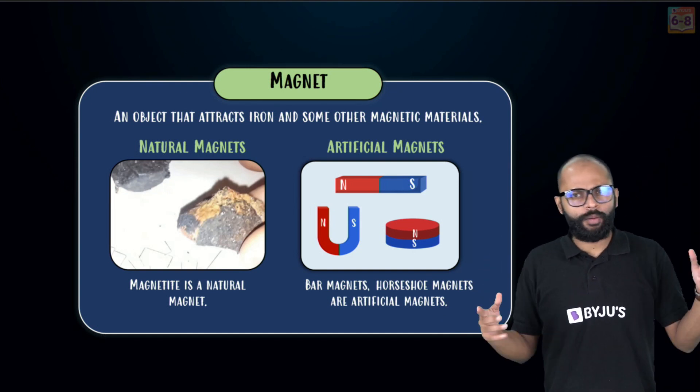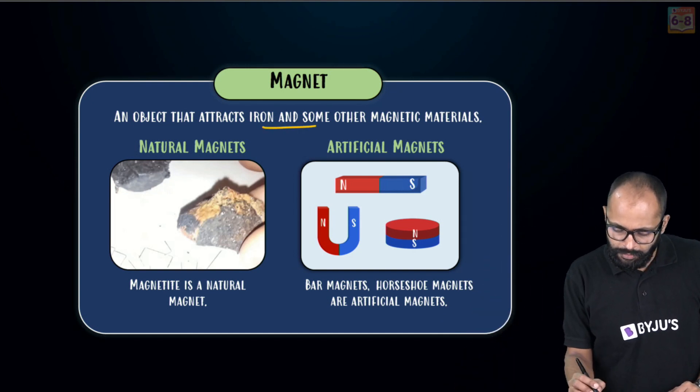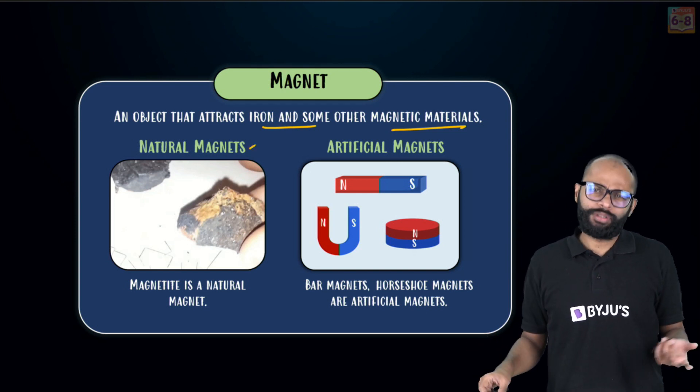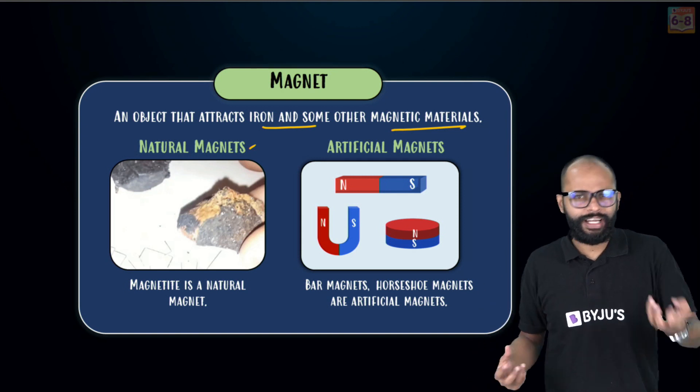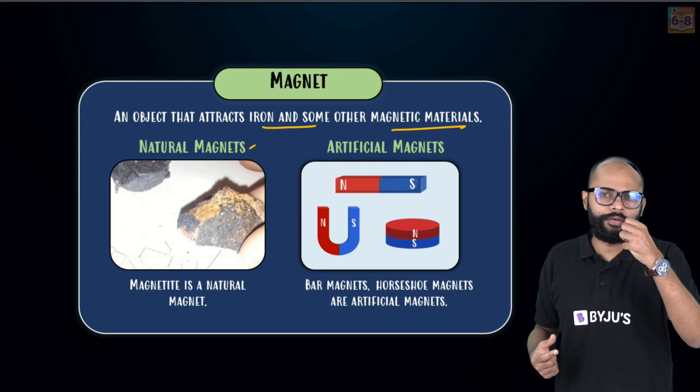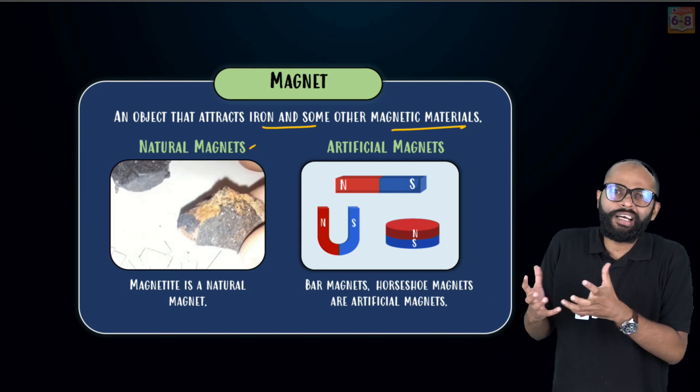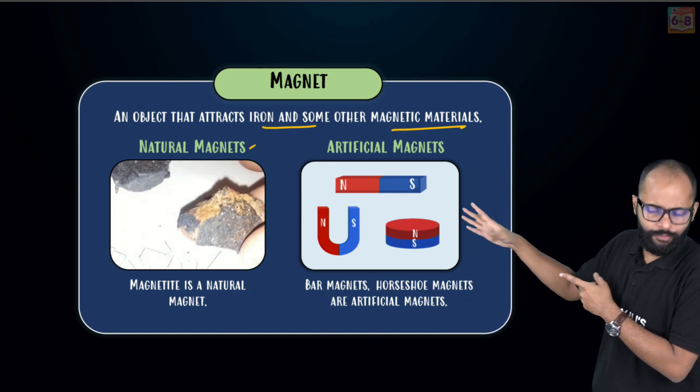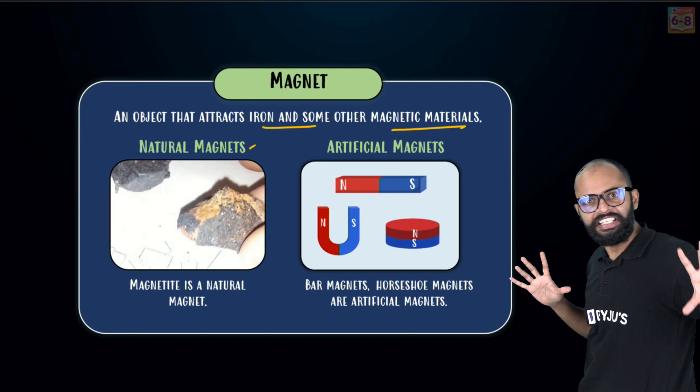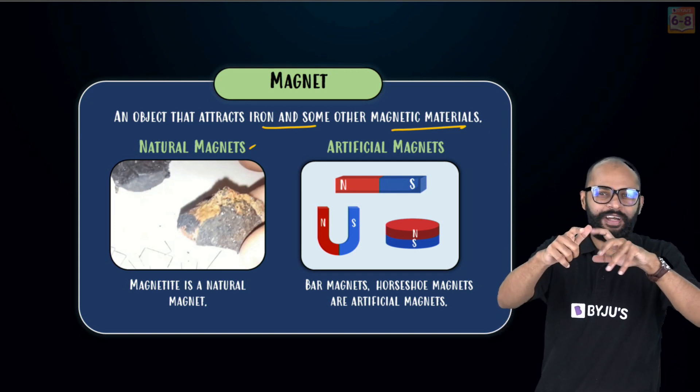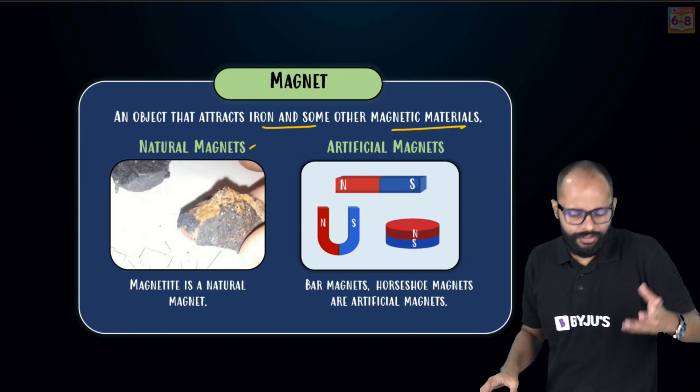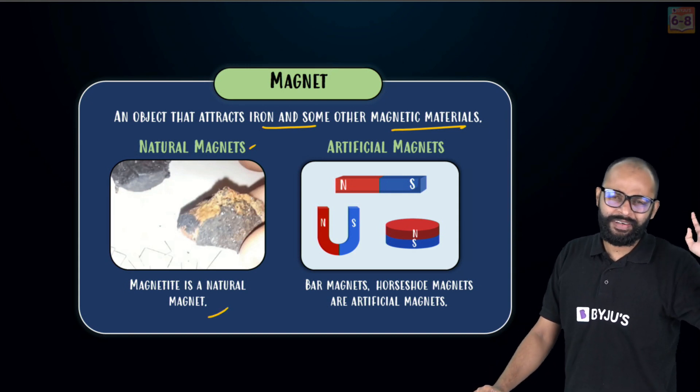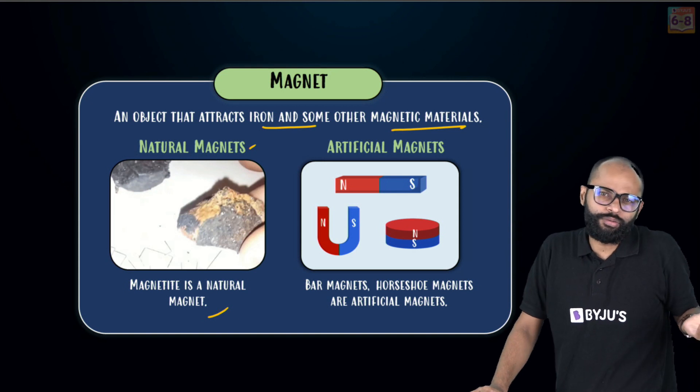Let's talk about magnets. What is a magnet? Any object that attracts iron and some other magnetic materials, it's called a magnet. Two types: naturally occurring and artificial. Naturally occurring means they occur in nature and look at it, it's very rough.